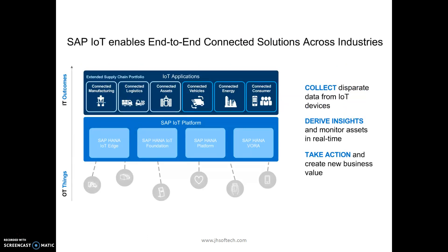SAP Internet of Things enables end-to-end connected solutions across industries. We have an extended supply chain portfolio and the SAP Internet of Things platform, which includes SAP HANA IoT Edge, SAP HANA IoT Foundation, SAP HANA Platform, and SAP HANA Vora. All of these are connected and integrated with SAP Leonardo, covering connected manufacturing, connected logistics, connected assets, connected vehicles, connected energy, and connected consumers.